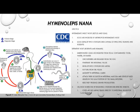Once infected, the onchospheres are released from the eggs, which then penetrate the intestinal villus. They then develop into cysticercoid larvae, which rupture from the villus and migrate to the intestinal lumen. Once there, they attach their scolices in the intestinal mucosa and develop into adults in the ileal portion of the small intestine. There, they produce gravid proglottids, which continues the life cycle. Alternatively, the host is infected by ingesting cysticercoid-infected insects, as discussed in the first part of this life cycle.